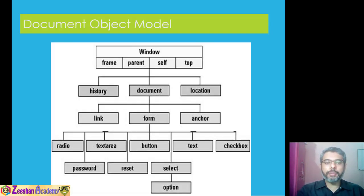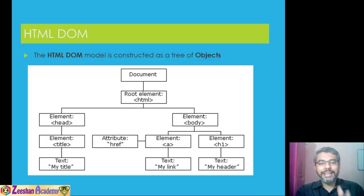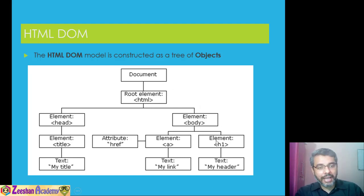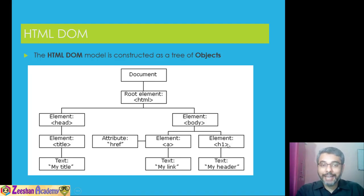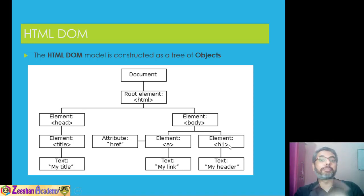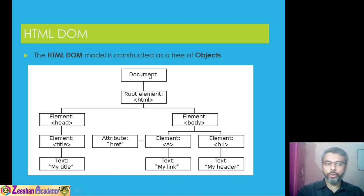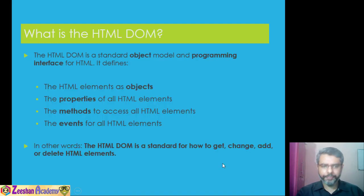We use something called document.getElementById. Document is the main object. getElementById is a method — it gets an element that has a particular ID, for example 'test'. Then we use the property called dot innerHTML. In order to access innerHTML we used innerHTML with getElementById belonging to a particular document, following the hierarchy.